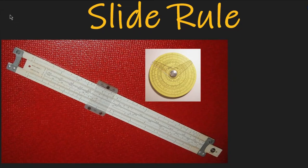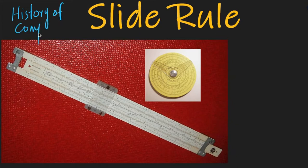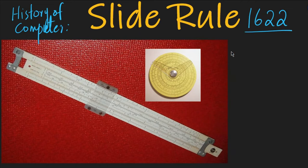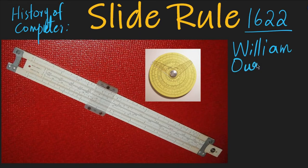The next machine we get in the history of the computer is the slide rule. This machine was made from Napier Bones. It was made in 1622 by Sir William Oughtred.